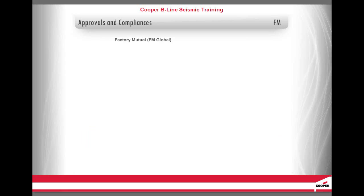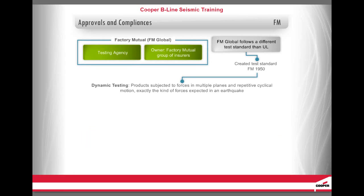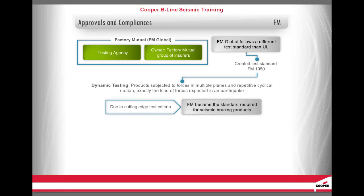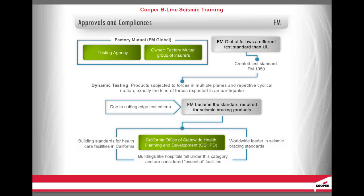Factory Mutual, FM Global, is a testing agency owned by the Factory Mutual group of insurers that follows a different test standard than UL. They have created their own test standard, FM 1950, which is a dynamic test. Dynamic means that products are subjected to forces in multiple planes and repetitive cyclical motion — exactly the kind of forces expected in an earthquake. Due to this cutting-edge test criteria, FM has become the standard required for seismic bracing products by the California Office of Statewide Health Planning and Development, OSHPD, which oversees building standards for every healthcare facility in California.